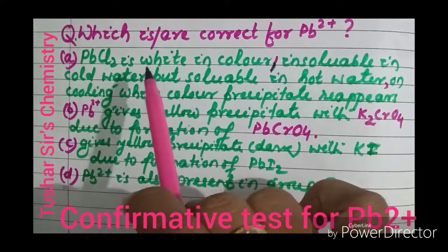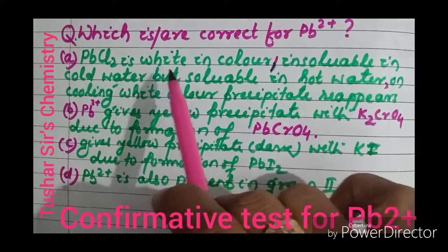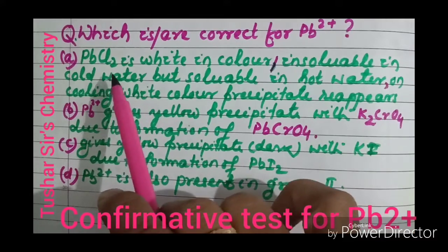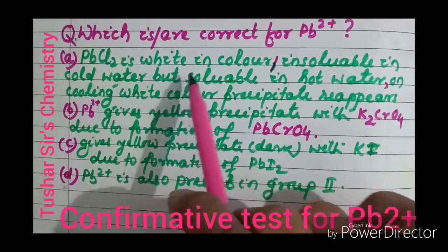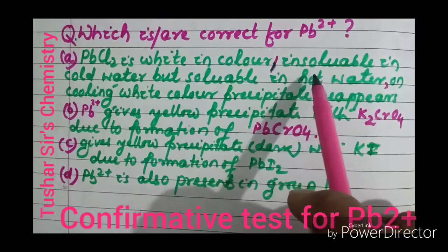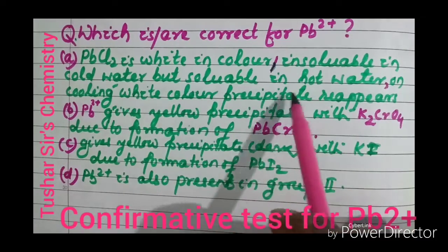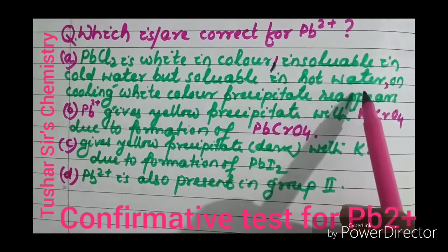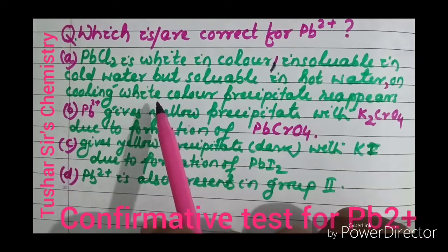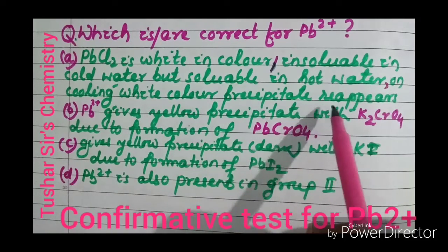Which of the following is/are true or correct? PbCl₂ is white in color. PbCl₂ is insoluble in cold water but soluble in hot water. On cooling, the white colored precipitate reappears.